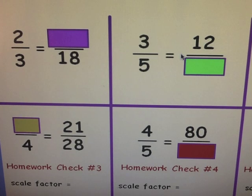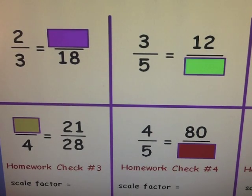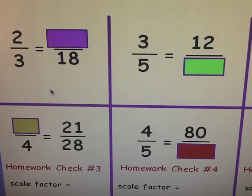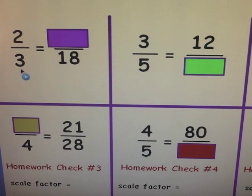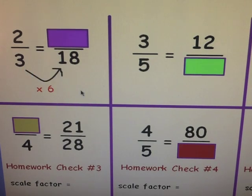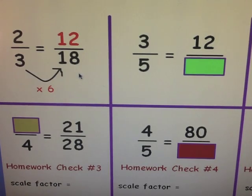We can also find missing numbers that make fractions equivalent by using our scale factor. For example, two-thirds is equivalent to something with eighteen as a denominator — we need to find the missing numerator. Think about what you know: you know the three and the eighteen. What can you multiply three by to make eighteen? That would be six. Three times six gives you eighteen, so then do the same to the numerator: two times six is twelve. So twelve-eighteenths is equivalent to two-thirds.